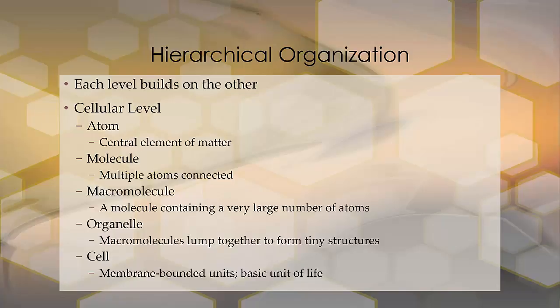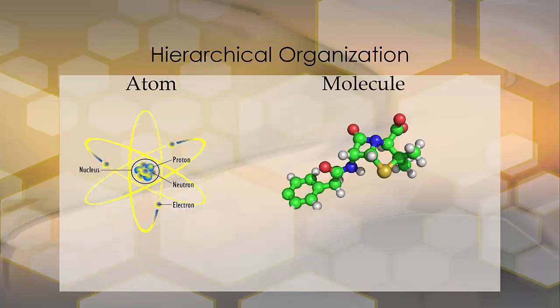A molecule is just multiple atoms put together. Organelles are macromolecules lumped together to form tiny structures, and then finally you get a cell — membrane-bonded units. I've given you examples of what this looks like.